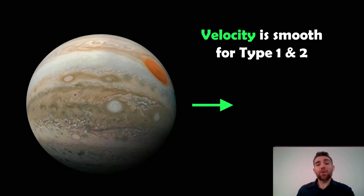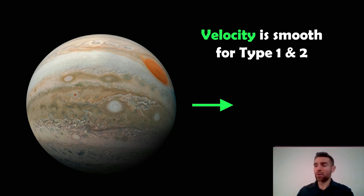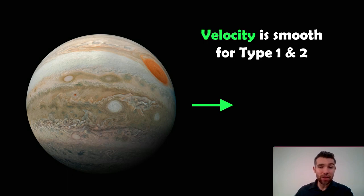The migration rates for type 1 and type 2 are typically smooth — they don't undergo any sudden rapid bursts where they suddenly jump inwards very fast. It's not linear, so they will change their velocity depending on the properties of the disk at their location and the mass of the planet, but it will still be relatively smooth.